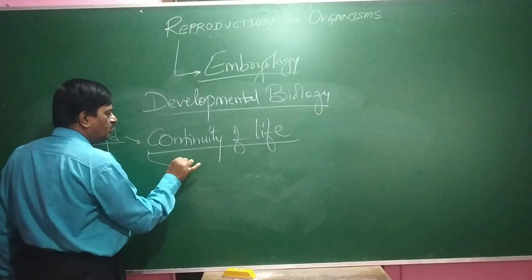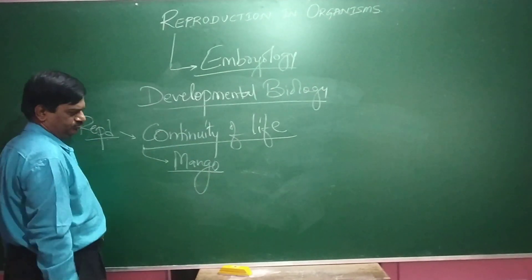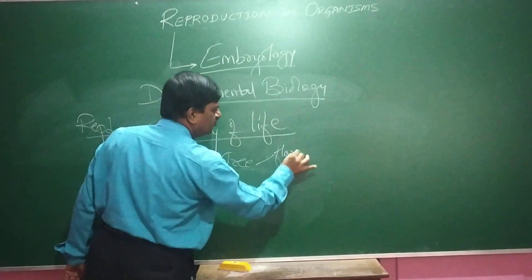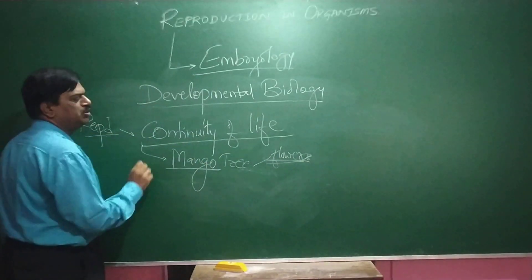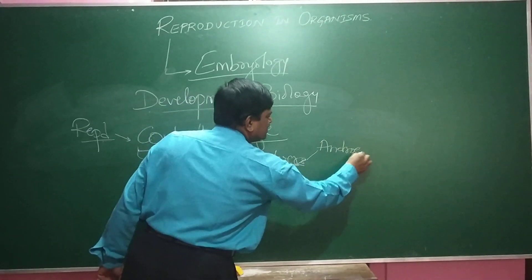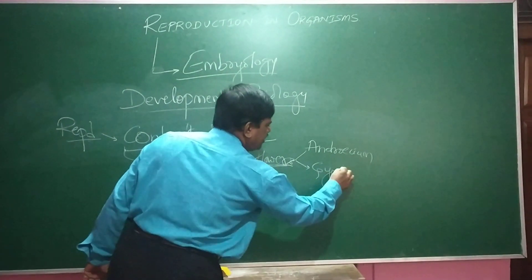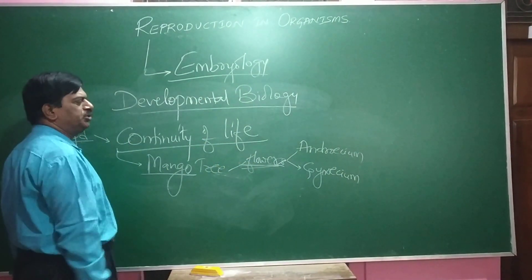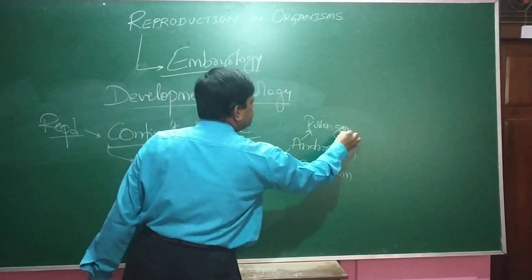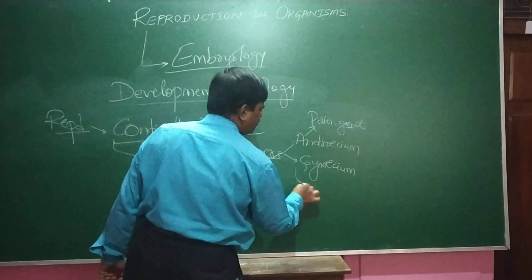For another example, take mango. The mango tree produces flowers. The flowers are called the reproductive part of a plant body. In the flowers, it produces a male reproductive structure called the anther and a female reproductive structure called the carpel. The anther produces pollen grains as the male gamete, and the carpel produces an ovule as the female gamete.